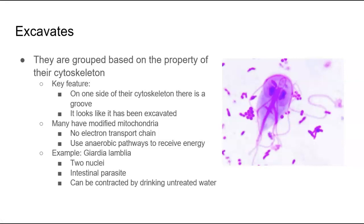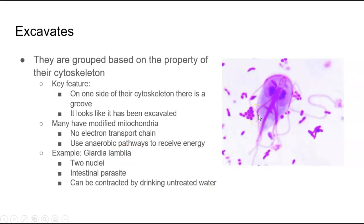Next we have the excavates. These organisms were grouped together based on their cytoskeleton — when you look at their cytoskeleton, they have a groove on one side so it looks like it's been excavated. What's interesting about this supergroup is that many organisms have modified mitochondria that do not go through the process of oxidative phosphorylation, meaning there's no electron transport chain. So excavates use a lot of anaerobic pathways to receive energy. An example is Giardia lamblia — it has two nuclei, and it is an intestinal parasite that can be contracted if you drink untreated water.